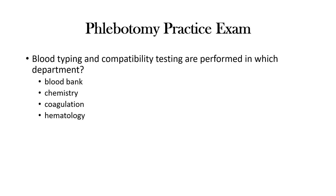Our last phlebotomy practice exam question is: Blood typing and compatibility testing are performed in which department? A. Blood bank, B. Chemistry, C. Coagulation, or D. Hematology. You have five seconds. You should be thinking blood bank. Blood typing and compatibility testing are performed in blood bank.